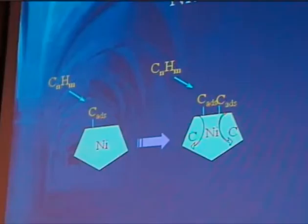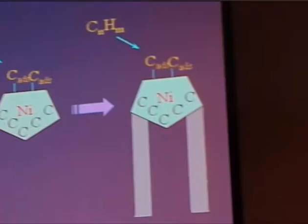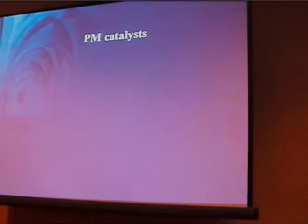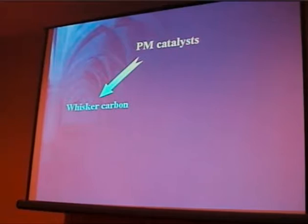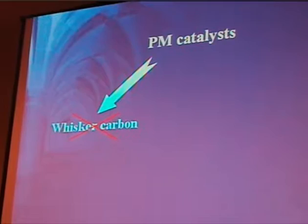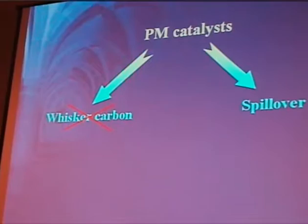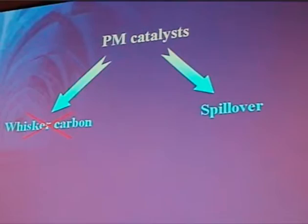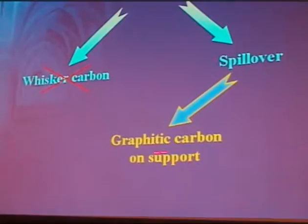If it were a nickel catalyst, we'd be making carbon filaments through dissolution. With precious metal catalysts, there isn't a good literature for whisker carbon, and we have looked with electron microscopy and cannot see any whisker carbon — we're not making classic filaments. What we believe is happening is carbon is spilling over from the metal onto the support, and we have been able to see graphitic carbon produced on the surface of the support.